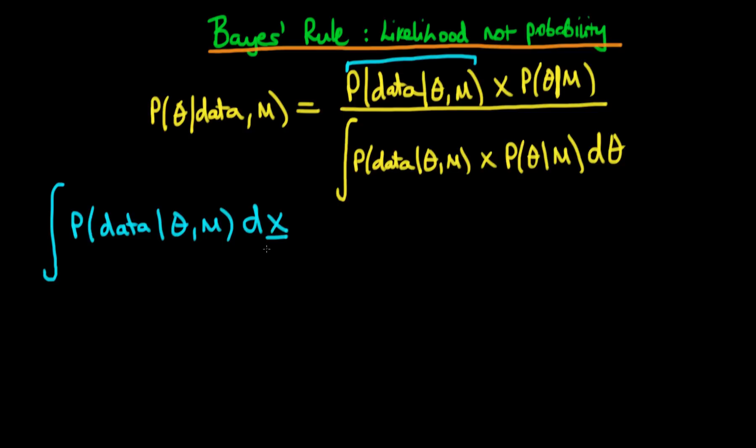We can imagine x being a vector of potential values of the data or potential variables. Well, we know that because it is a probability density and because we're holding theta fixed, this actually integrates to one.